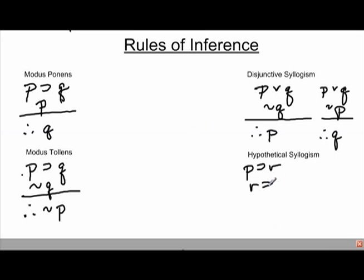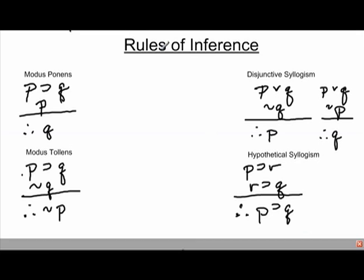From the last subset, we had the hypothetical syllogism. We had: if p then r, if r then q — that necessarily leads to the fact that if we have p, we would naturally get q in the end. That was the eight-row chart we had before: if p then q necessarily had truthful statements of p then r, r then q. So that's our hypothetical syllogism.